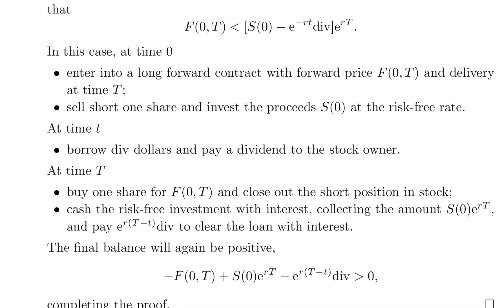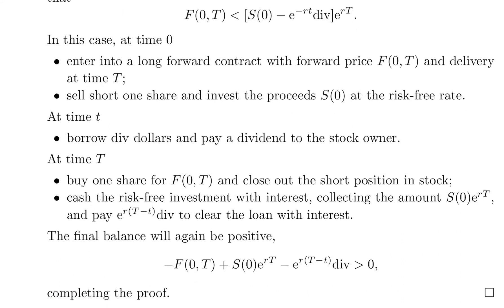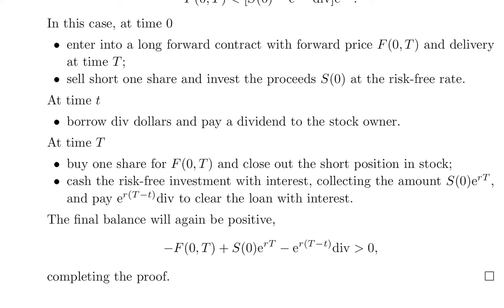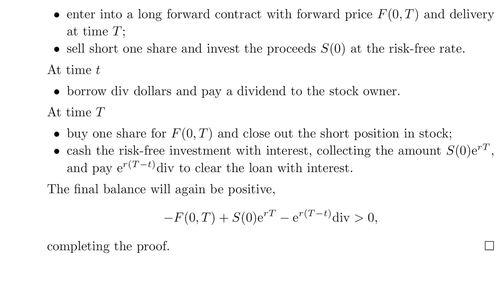At time T, buy one share for F(0,T) and close out the short position in stock. Cash the risk-free investment with interest, collecting the amount S0 · e^(rT), and pay e^(r(T−t)) · div to repay the loan with interest. The final balance will again be positive: −F(0,T) + S0 · e^(rT) − e^(r(T−t)) · div > 0, completing the proof.